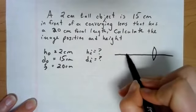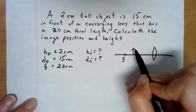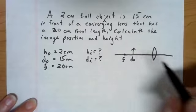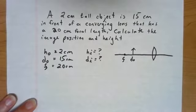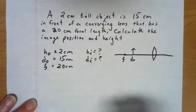So the height of our object is two centimeters. The height of our image is unknown. The distance for our object is 15 centimeters. The distance of our image is unknown. And we know that the focal length is 20 centimeters. So if we were just to do a quick setup of this, if our focal length is 20, then we're going to have an image at, excuse me, an object about the 15 centimeter mark.